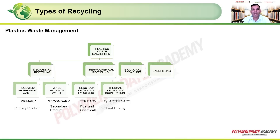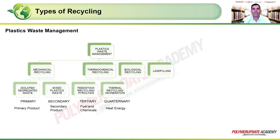Looking at mechanical reprocessing, the first type is primary recycling, where a product is converted from source-segregated waste back into the same primary product. Secondary recycling uses mixed plastic waste to make a secondary product — for example, a milk jar or jerry can could be converted into a flower pot, or fibrous material made into a carpet.